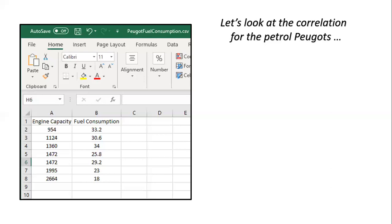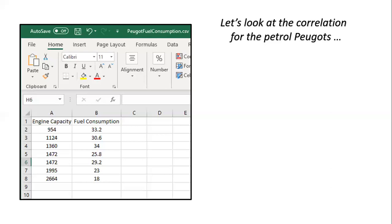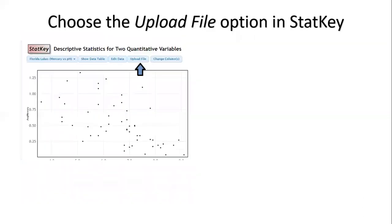Well, what we're going to do once we've created that file is we're going to go to StatKey using our familiar website there. When we go to StatKey in the first column under descriptive statistics and graphs, there's an option to look at two quantitative variables. We'll click on that. And when we do that, it brings up a scatter plot for one of the book's data sets of Mercury versus pH and Florida lakes. But that's not the data set we're interested in analyzing. So we're going to find the option for uploading a file. And we're going to click on that.